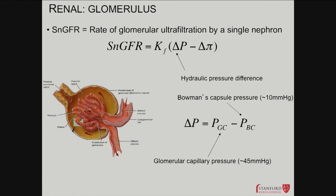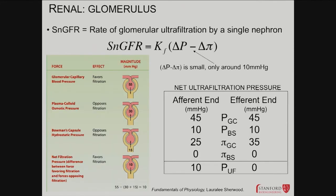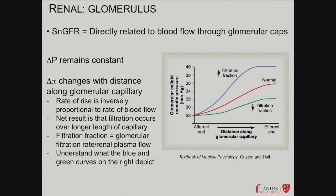Thinking about this quantitatively: the hydraulic pressure breaks down into the pressure differential between the glomerular capillary and Bowman's capsule, usually about 10 millimeters of mercury. Toward the end, the oncotic pressure rises to match it. The ultrafiltrate oncotic pressure is mostly water. The hydrostatic pressure more or less remains constant; the big change is in the oncotic pressure with distance along the capillary. Here's what I was talking about earlier — it's the difference between the afferent and efferent ends. By the time you get to the end, things are pretty well balanced with not much net filtration.